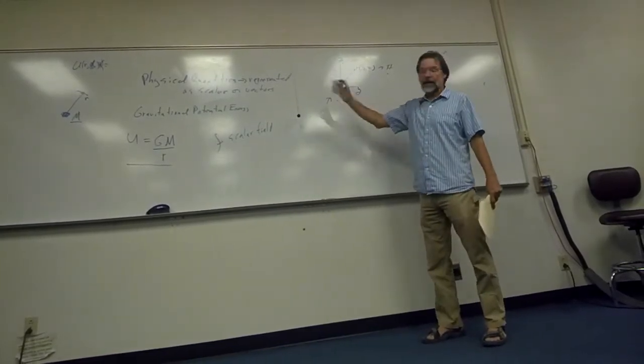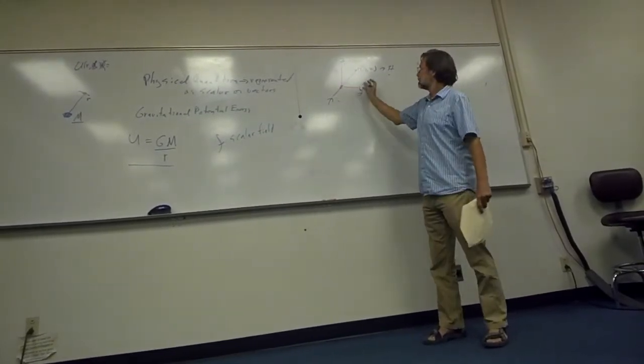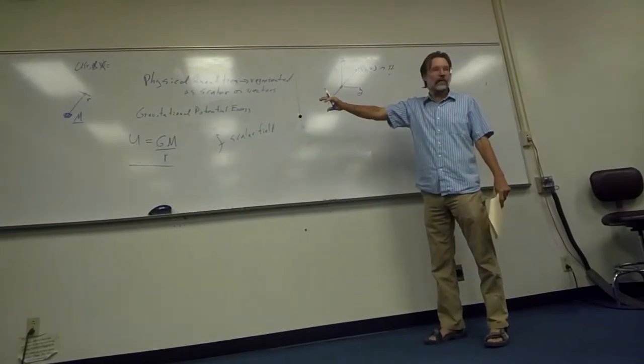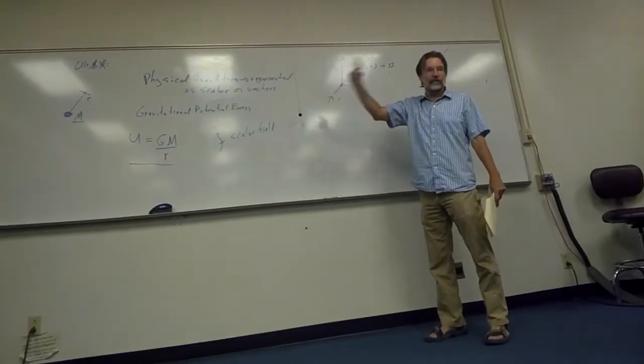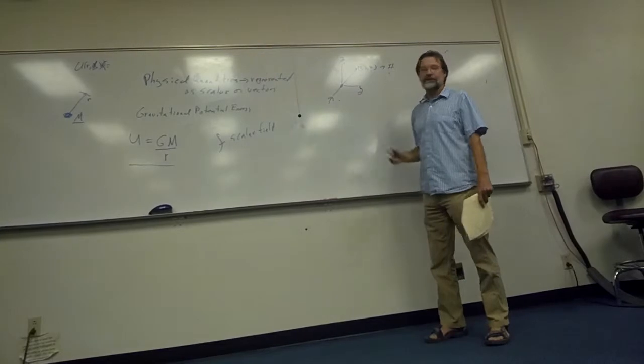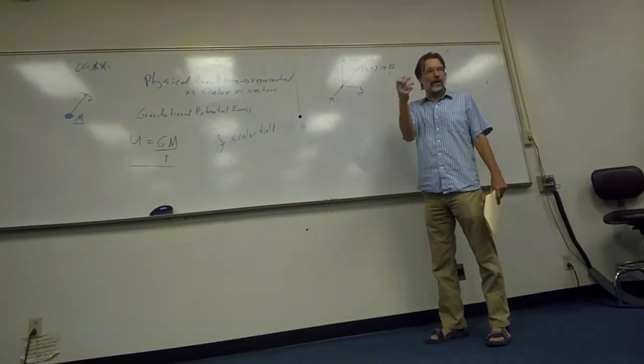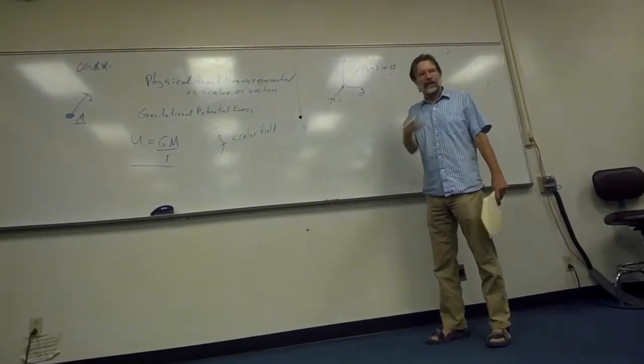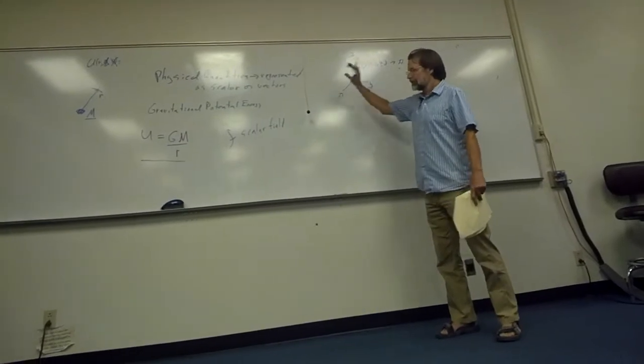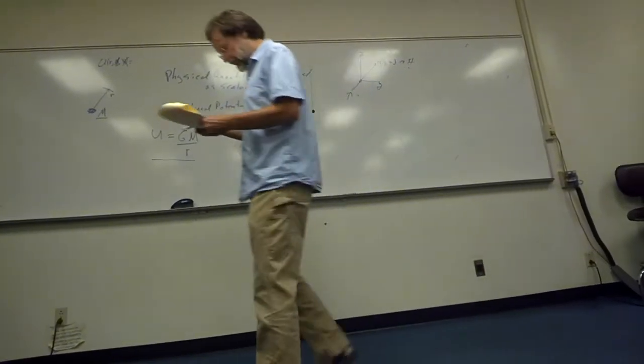So even for a scalar here, there's different representations of the same number. In that coordinate system, there's one number. Here you have to add three together, or three components that add to that. They're not really components, but they're the scalar parts of that particular quantity.